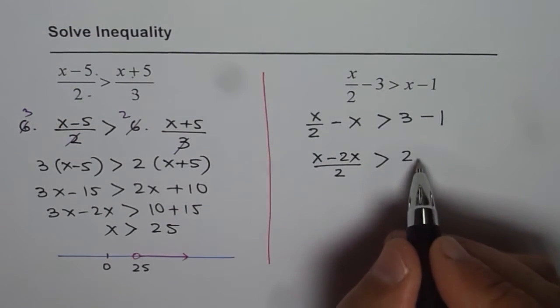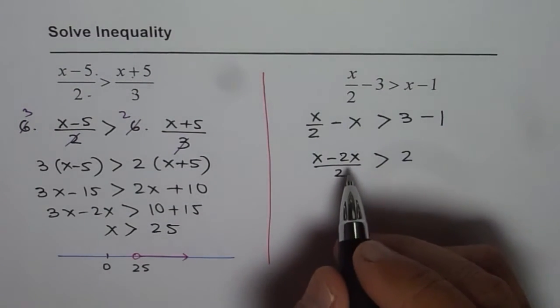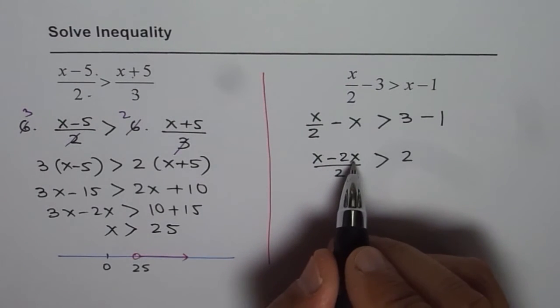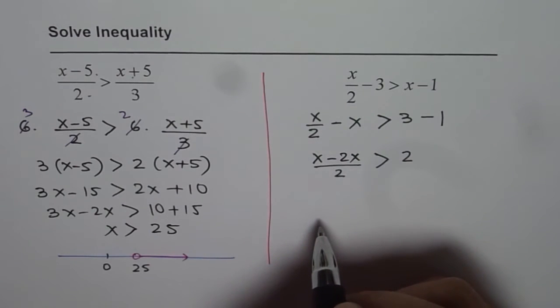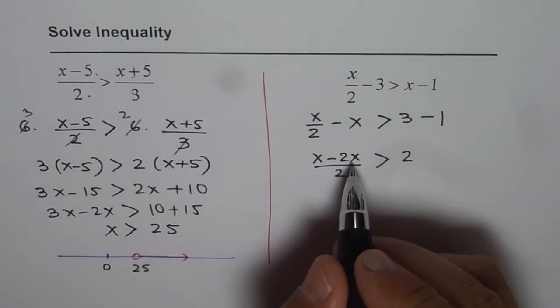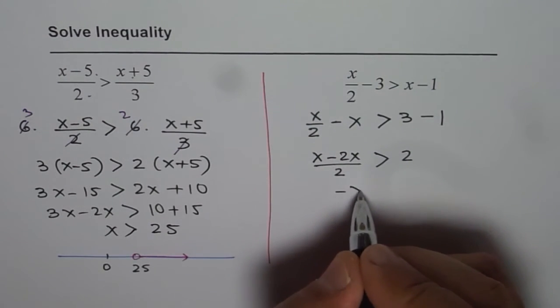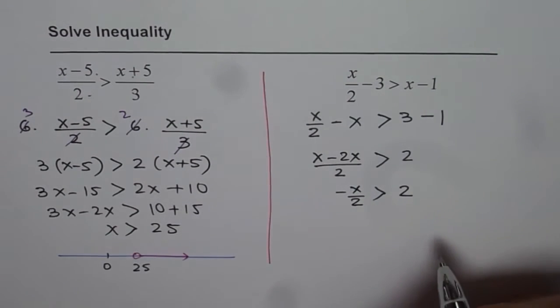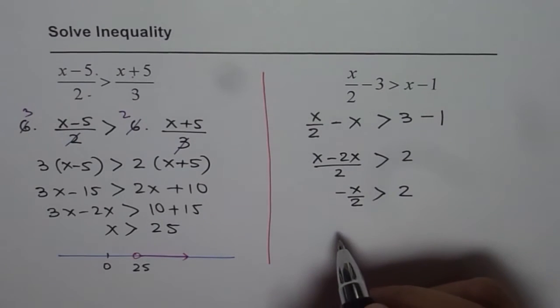Now you can multiply both sides by 2. So what do we get? Or what we can do is we can simplify the numerator x minus 2x is minus x. So let me write this as minus x by 2 greater than 2.